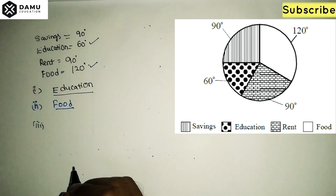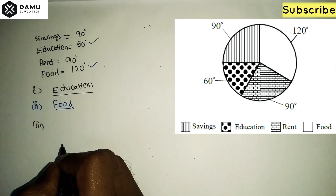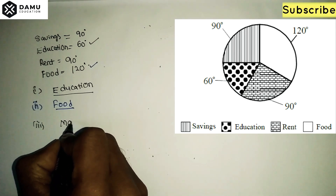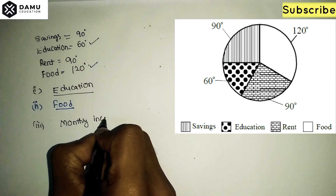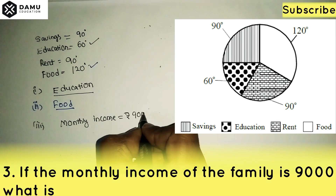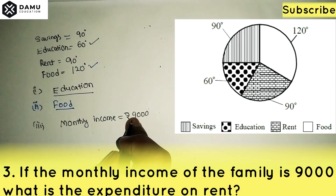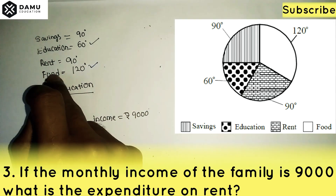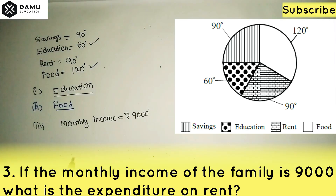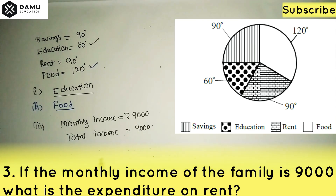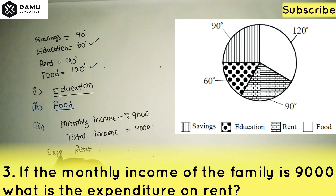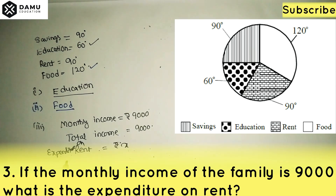The third question: if the monthly income of the family is 9000 rupees, what is the expenditure on rent? Monthly income equals 9000 rupees. This monthly income is divided among food, rent, education, and savings. So total income equals 9000 rupees. We need to find expenditure on rent — let's call it x rupees.